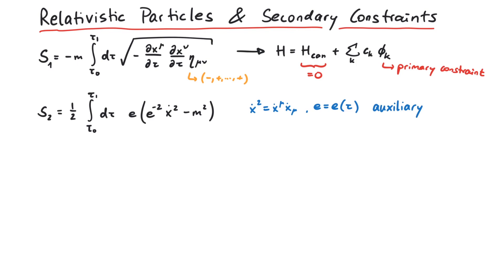This Lagrangian has two advantages over the previous one. First, it does not contain a square root, which leads to simpler equations of motion. Second, we can easily investigate a massless particle, whereas for the previous Lagrangian everything would be zero for m equals zero. These advantages are nice, but we also have to show that these two Lagrangians really are equivalent.